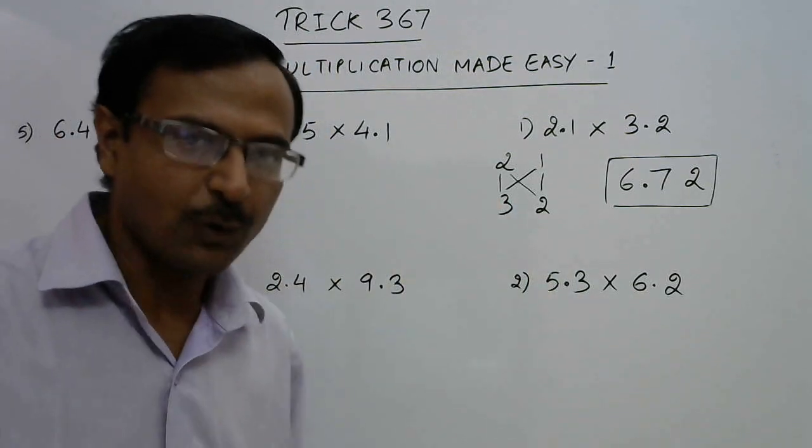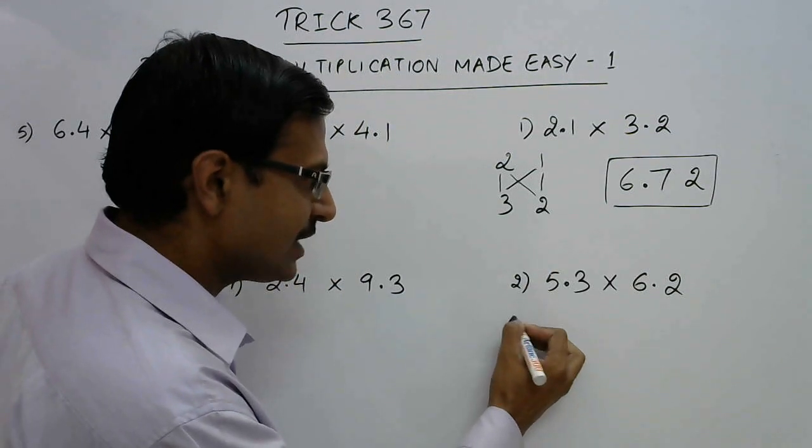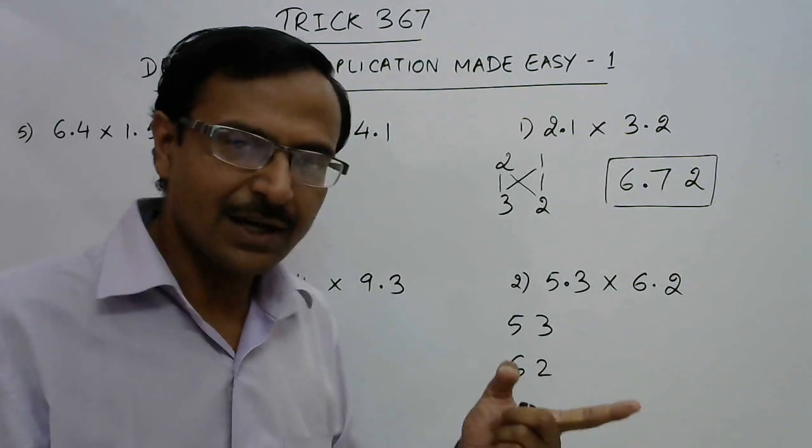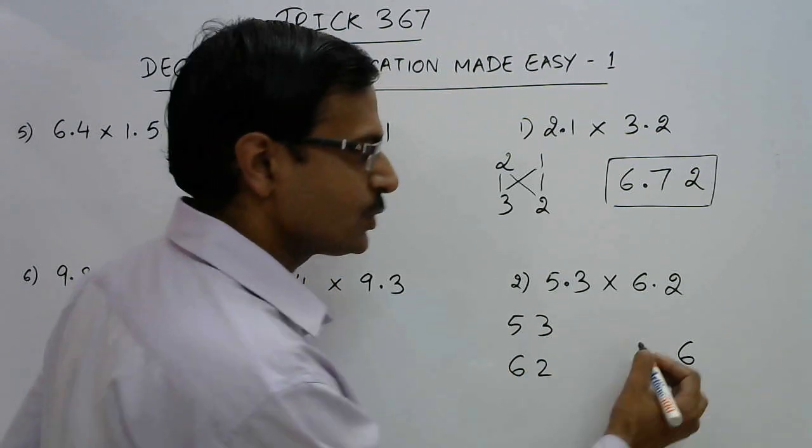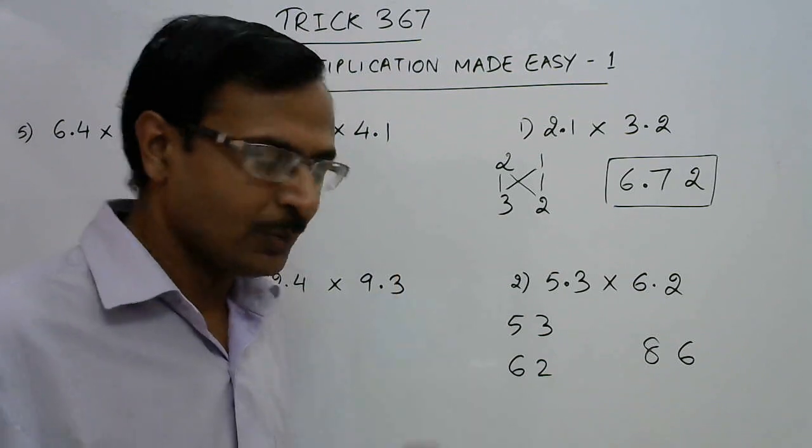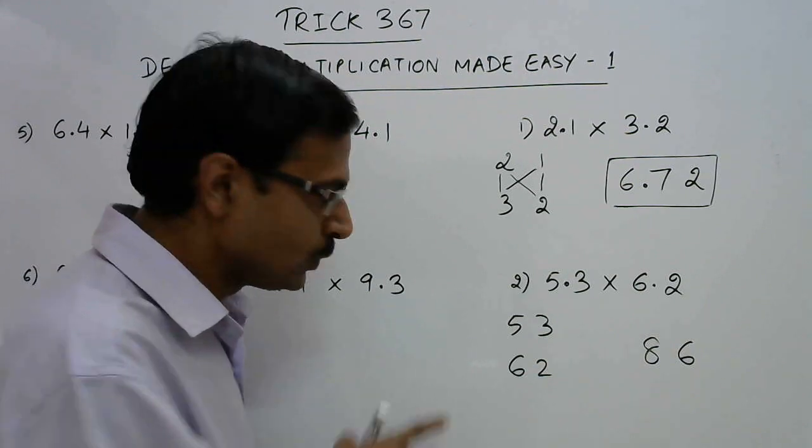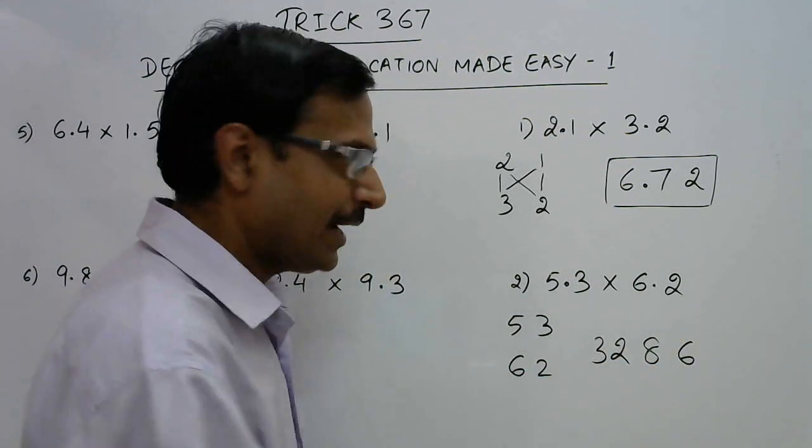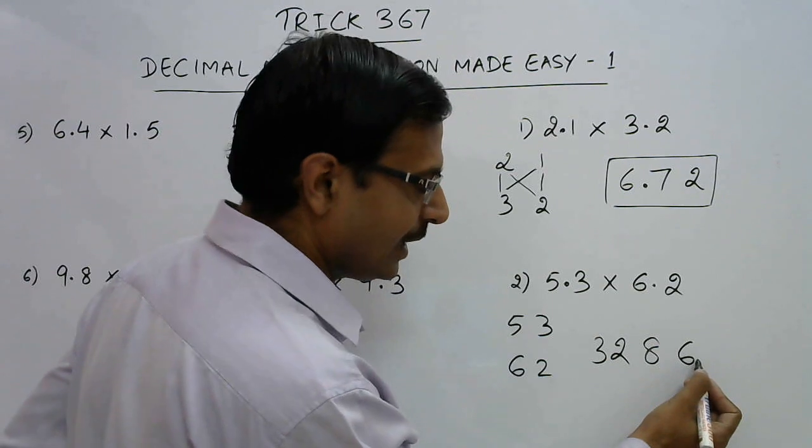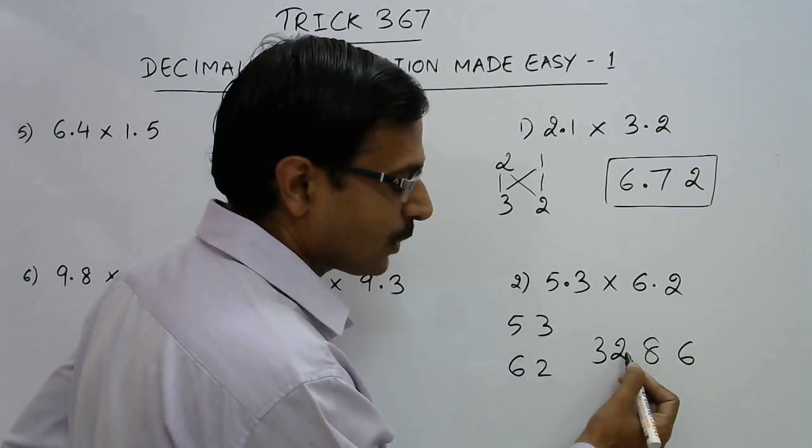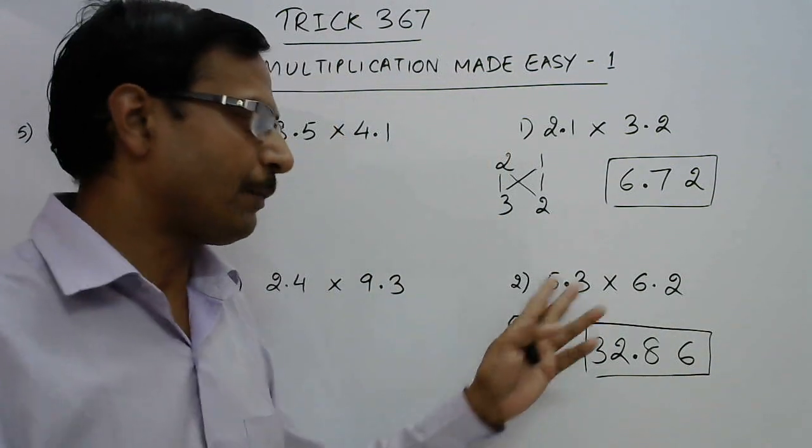Let's practice this method for one more question. 5.3 and 6.2. I will just write them as 53 and 62. Now start writing the answer straight forward. 3, 2's are 6. You have a 10 here and a 18 here, so 28. So write 8 and you have to carry 2. Tens digits 30 plus 2, you remember that carry 2, 32. So you have the answer here 3, 2, 8, 6 and again 1 and 2 so you have to put 2 decimals. So just put a decimal 2 digits from the right side. So 1 and 2 this becomes 32.86 as the product of 5.3 and 6.2.